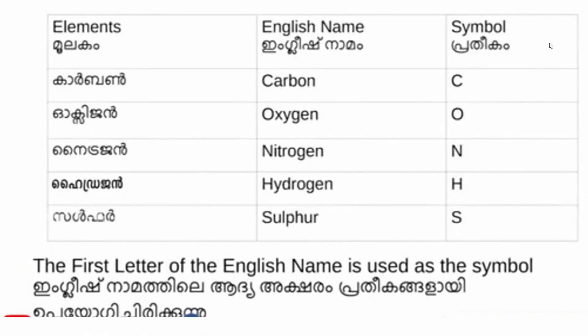Elements, English name, symbol: Carbon — symbol C. Oxygen — symbol O. Nitrogen — symbol N. Hydrogen — symbol H. Sulfur — symbol S. All symbols use the first letter of the English name.